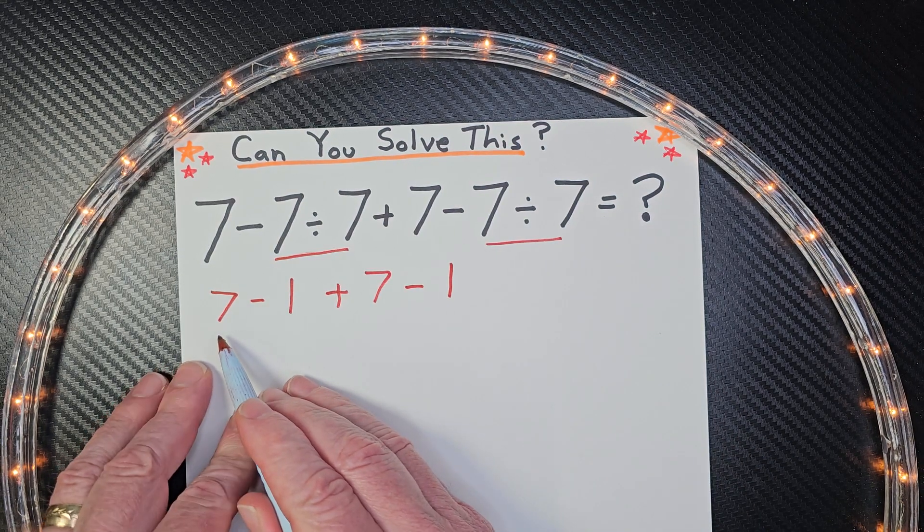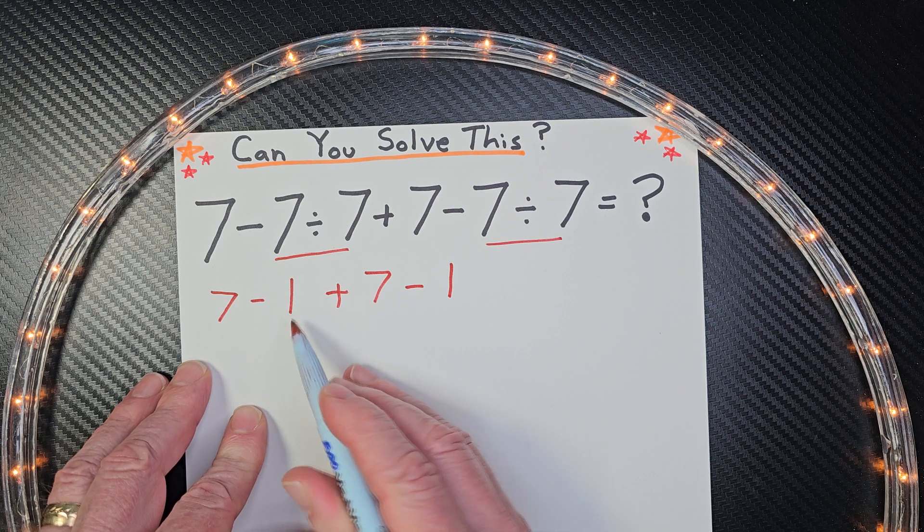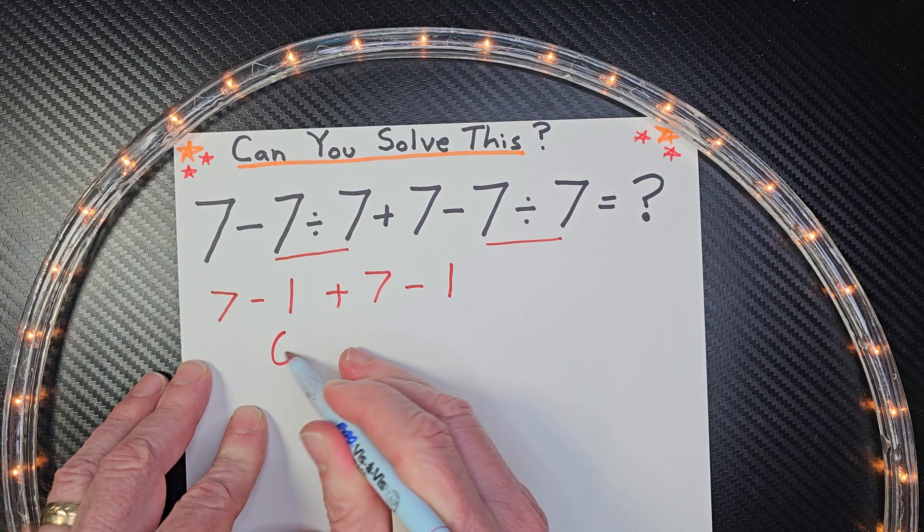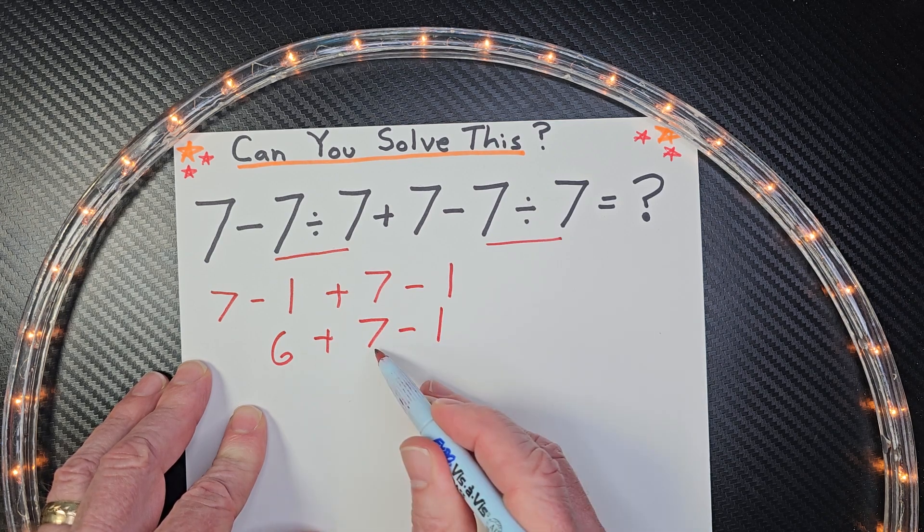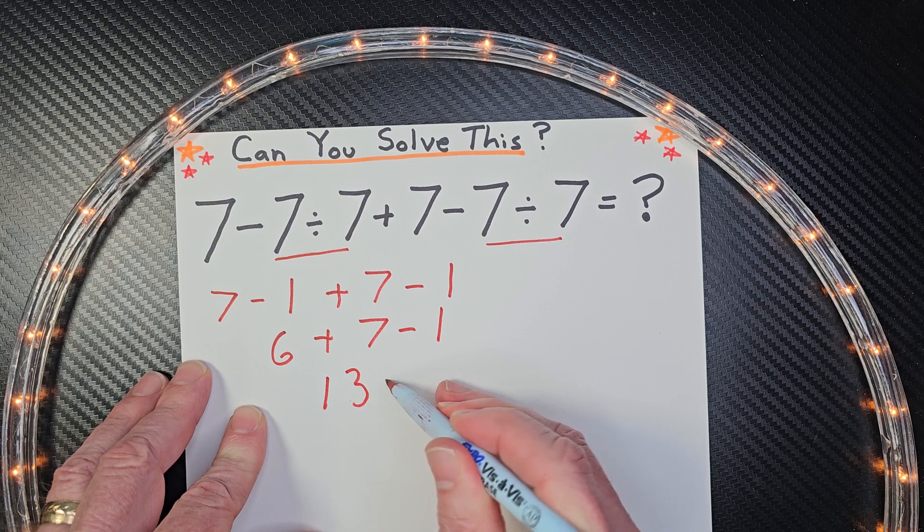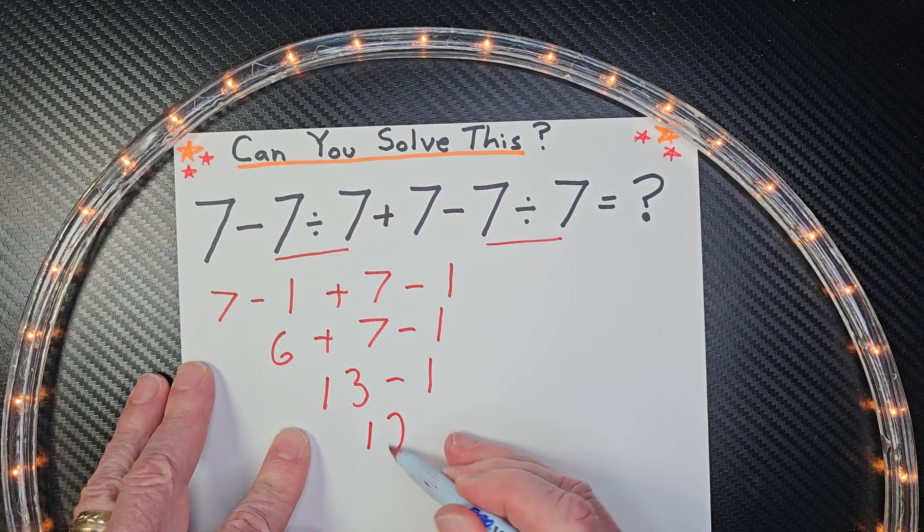Now I'm just going to work from left to right. So 7 minus 1 equals 6 plus 7 minus 1. 6 plus 7, 13 minus 1. And 13 minus 1 would equal 12.